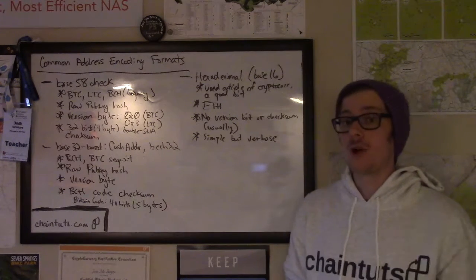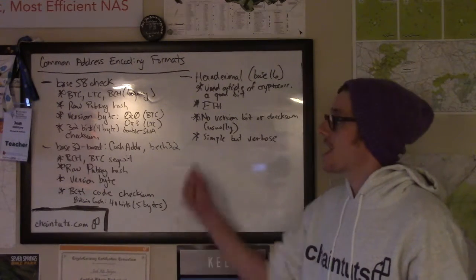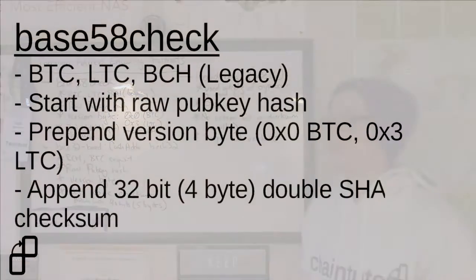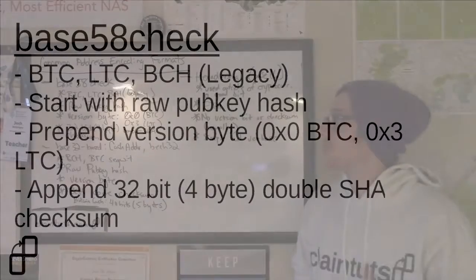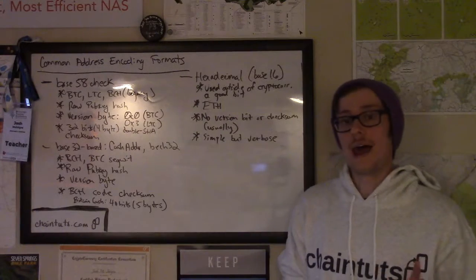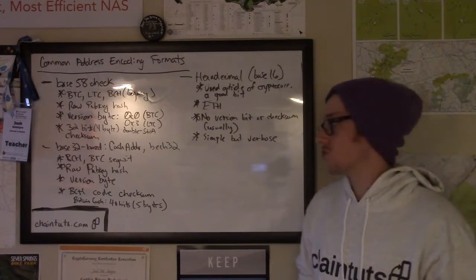We add to the front of that public key hash a version byte — one byte of information or eight bits. For Bitcoin, that's usually 0x00 in hexadecimal for legacy addresses. So when you see the final encoded address, those are the Bitcoin addresses that start with the number one. But for Litecoin, the 0x30 address version byte gives you that 'L' that you see at the beginning of the address.